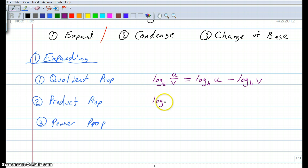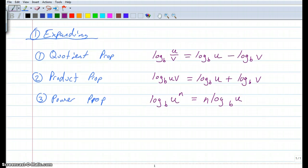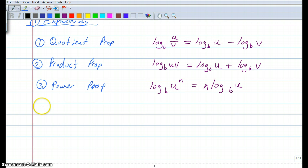Product says, if you have log base B of U times V, that can be rewritten as log base B of U—and what do you think? If division was subtraction, multiplication is addition—log base B of V. And then the power property says log base B of U to the N power is N times log base B of U. N becomes a coefficient. The exponent becomes a coefficient. So these are three little tricks that we're going to apply to problems, and what we're going to ask you to do is expand.